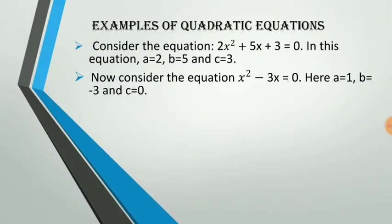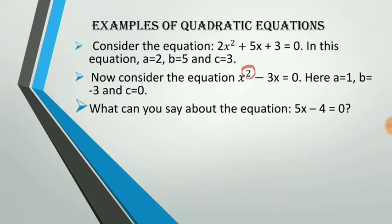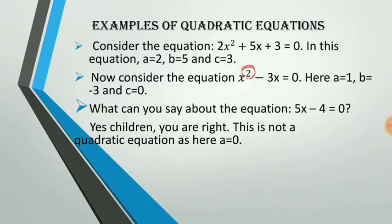Now consider another equation: x squared minus 3x equal to 0. The degree of x is 2, so the coefficient of x squared, which is a, is 1, the coefficient of x is minus 3, and the constant term c is 0. Similarly, consider 5x minus 4 equal to 0. The coefficient of x squared here is 0, so it is not a quadratic equation — it is a linear equation.